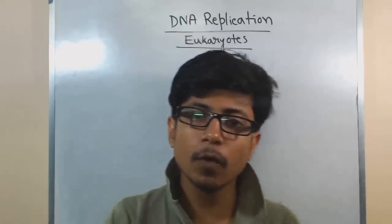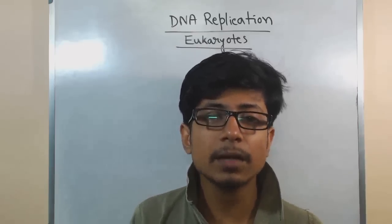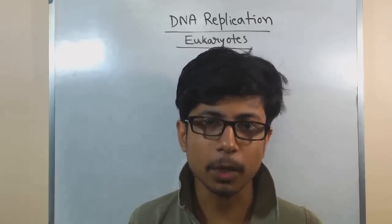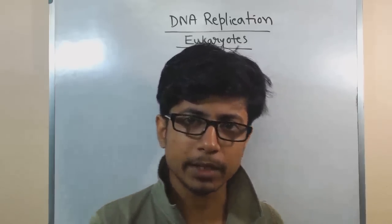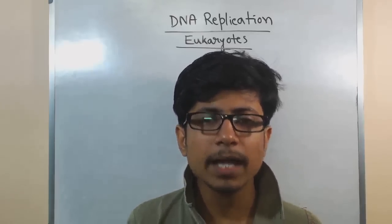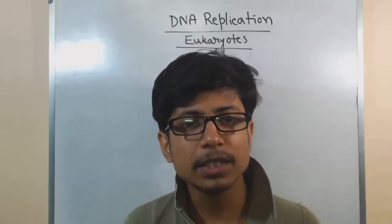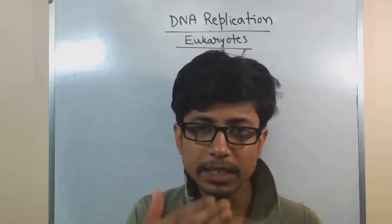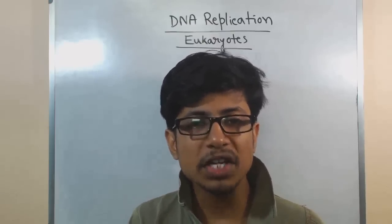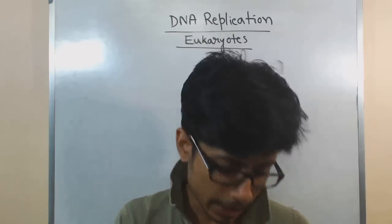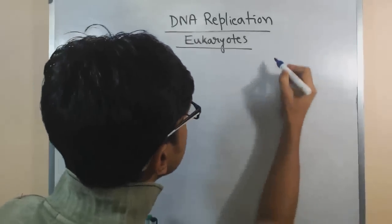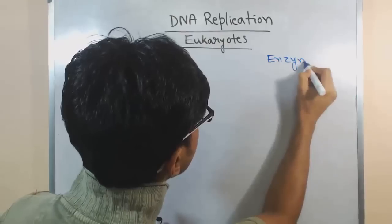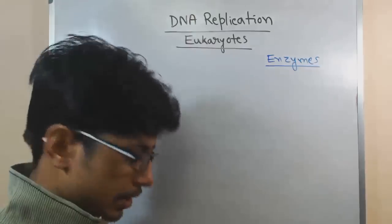In this first video, I'll be covering four different video lectures regarding DNA replication in eukaryotes. In this first lecture, I'll be talking about the basics and overview of DNA replication in eukaryotes, the types of enzymes involved, and where eukaryotic DNA replication differs from prokaryotic replication. From the next three lectures, we'll be talking about the initiation, elongation, and termination of DNA replication in eukaryotes. In this video, we are majorly concerned about the enzymes used in DNA replication and the basics of it.